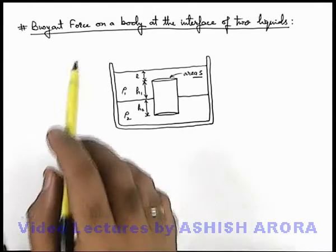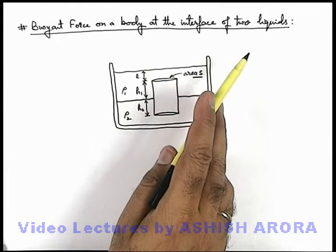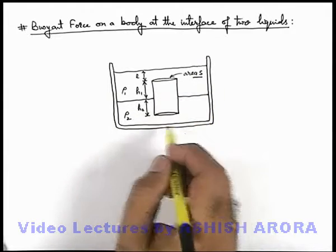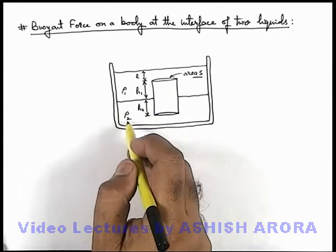Let us discuss the analysis of buoyant force on a body at the interface of two liquids. Here you can see in a container there are two immiscible liquids filled one over another with densities ρ₁ and ρ₂.